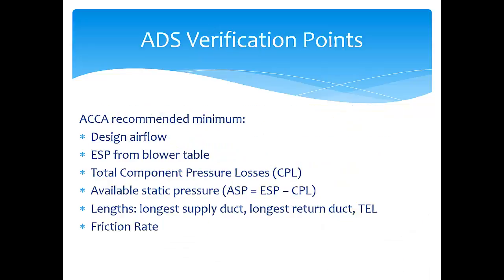That brings us to the ACCA recommended verification points for duct sizing. We've come up with six essential points that are pretty easy to verify: first, the design airflow for the blower; second, the associated external static pressure at that airflow — both easy to verify from the blower table; third, the component pressure losses (sum of losses from the coil, filters, grills, registers, etc.); fourth, an arithmetic check that available static pressure = ESP minus CPL; fifth, verify the total effective length used in the friction rate equation for the longest path; and sixth, confirm the friction rate falls within the wedge and was calculated correctly.